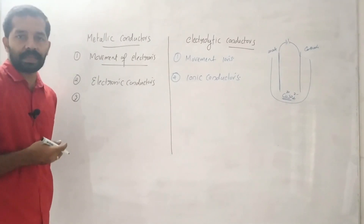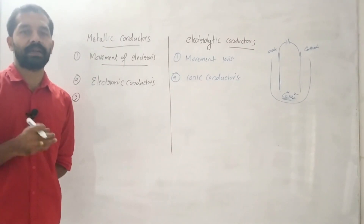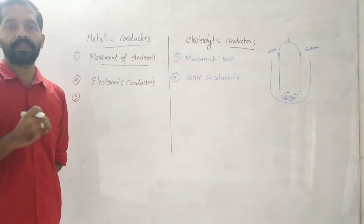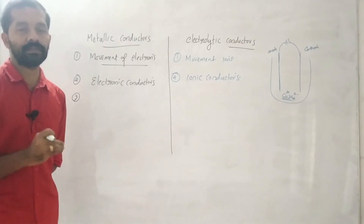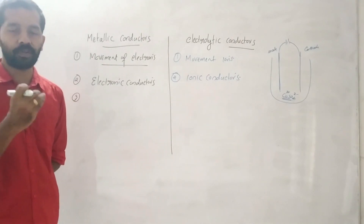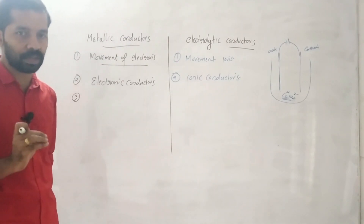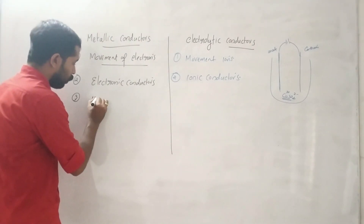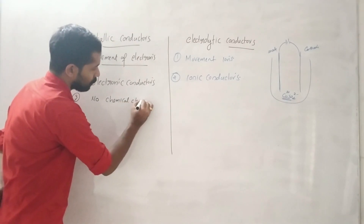Metallic conductors are defined as conductors which allow the passage of electricity without undergoing any chemical change. For example, when electricity passes through copper wire, there is no chemical change.